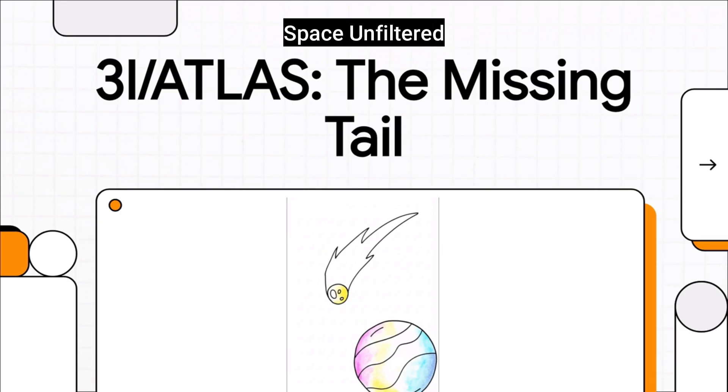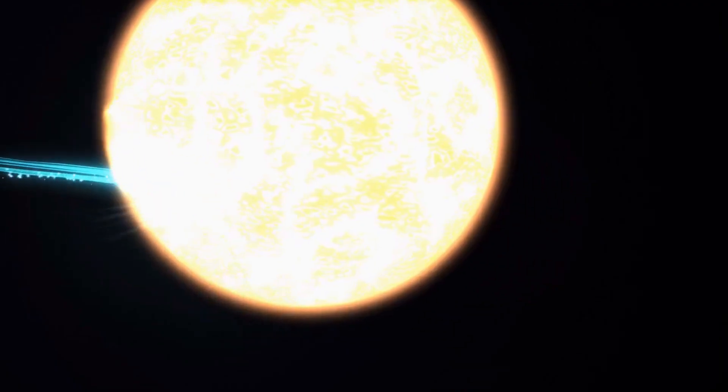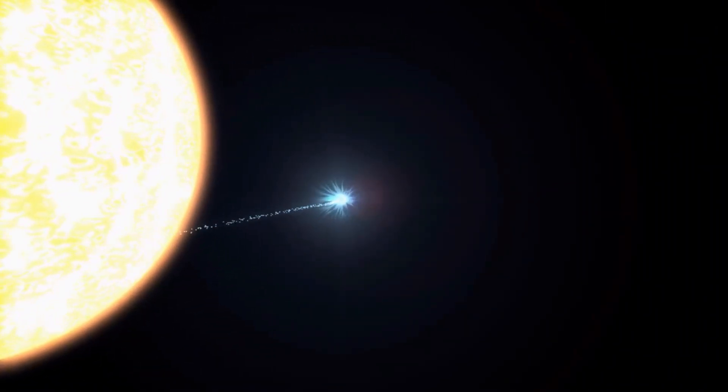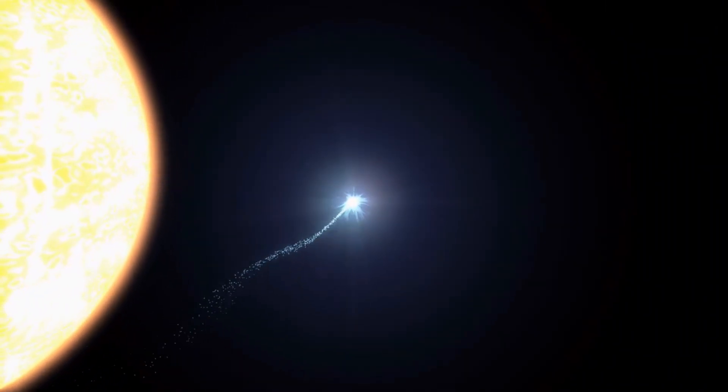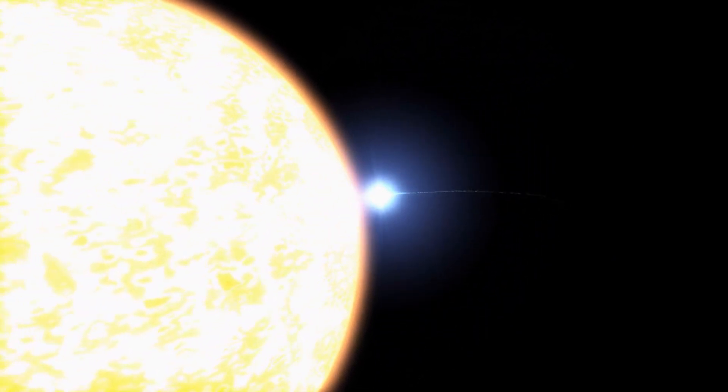That was the big question, right? If this thing is an interstellar comet, where's its tail? We all know comets are famous for those incredible long tails of gas and dust, but this first good look from Mars just showed nothing like that. So what was really going on?